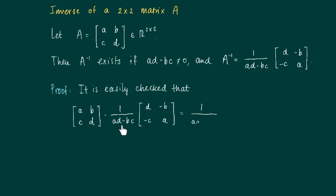We take out the constant here so that we get 1 over ad minus bc. And now we multiply matrix a, b, c, d with the matrix that is over here with d and a on the diagonal and minus c and minus b in the anti-diagonal.